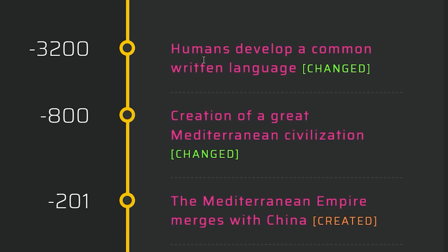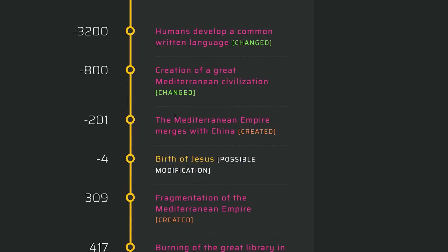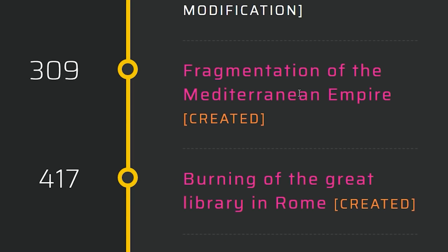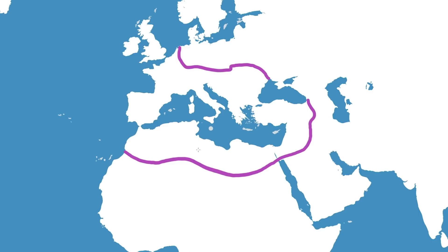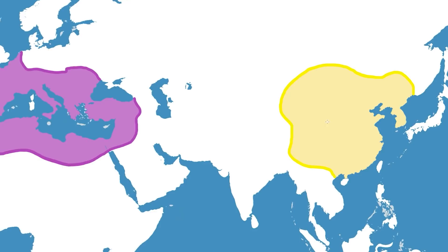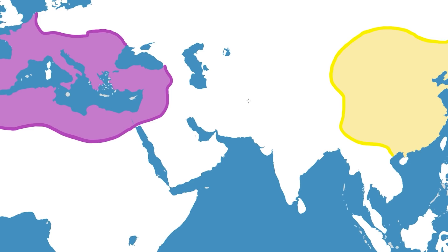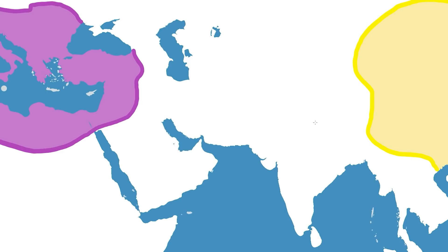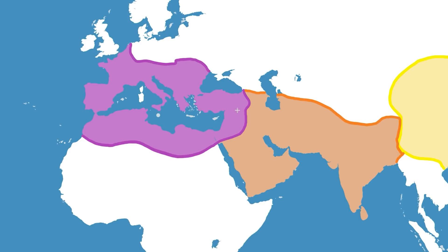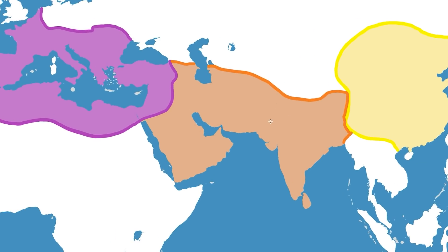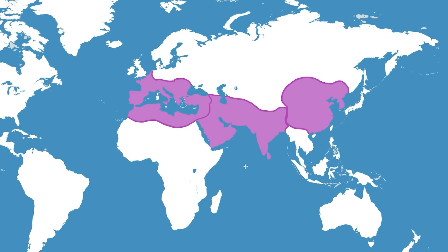That happened in negative 3,000 BC. In negative 800, we have the creation of the great Mediterranean civilization. Negative 200, the Mediterranean Empire merges with China, but then there's fragmentation of this same empire. Is this like Rome? And since they're all using the same language, I'm guessing it's easier for everyone to unify. Burning of the great library in Rome. So for a brief period of time, we had this empire unify with some civilization from China.